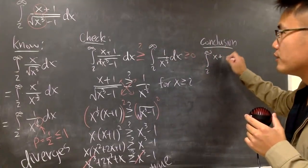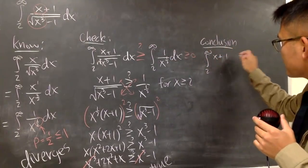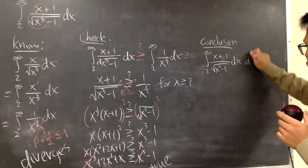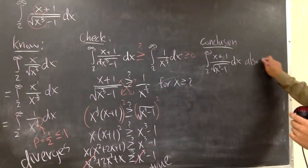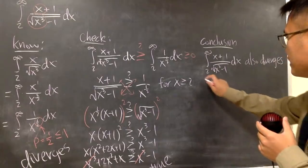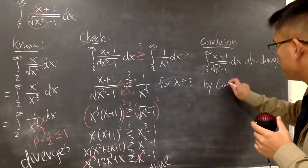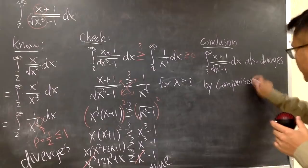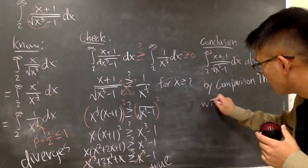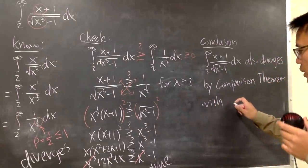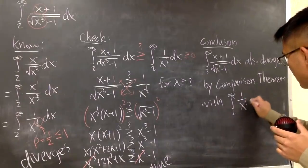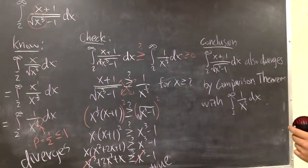I want to tell you guys that the improper integral from 2 to infinity, x plus 1 over square root of x cubed minus 1 dx also diverges. This is why you can say by the comparison theorem with the divergent that you know, which is that 1 over x to the 1 half power dx. That's it.